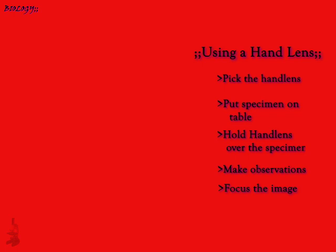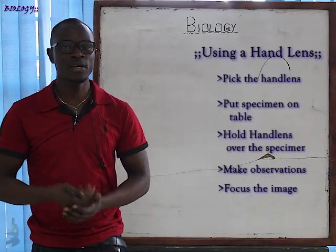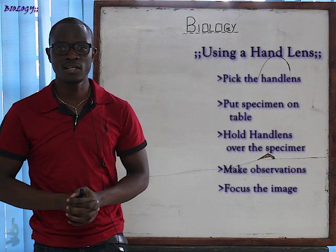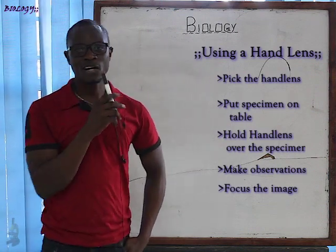Then you can draw or write what you observe. In short: pick the hand lens with one hand, place the specimen on the table, then observe the specimen through the lens, and move the lens up or down until the image is clear. If asked in an exam how to use a hand lens, that is the answer — worth about 3 to 5 marks.